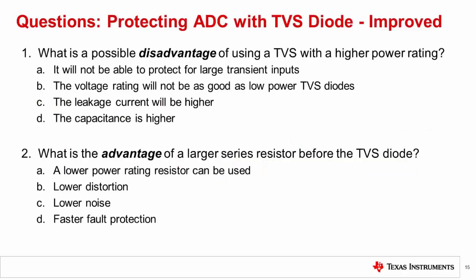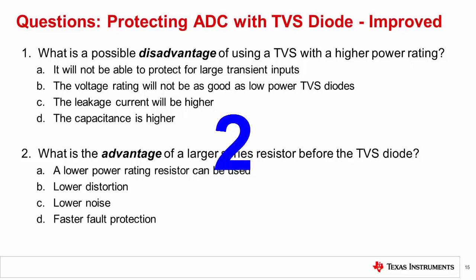Question 1: What is a possible disadvantage of using a TVS with a higher power rating? The correct answer is D: the capacitance is higher. This is an important reason to consider a lower power TVS diode.